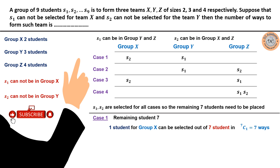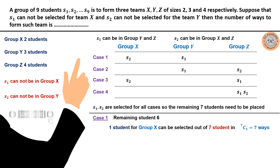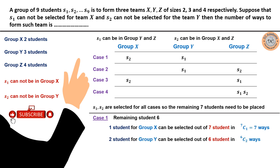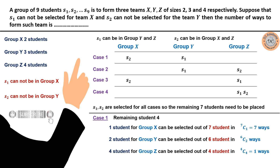For group Y, which needs three students, S1 is already there, so two more are needed. These two students can be chosen from the remaining six students in 6C2 ways. After selecting for group Y, four students remain, and group Z needs exactly four students, so they fill it in 4C4 = 1 way.